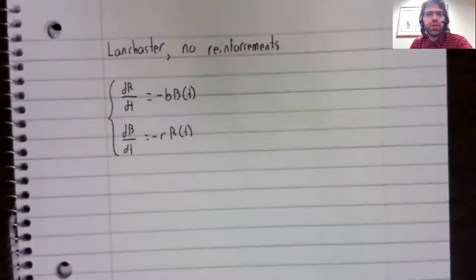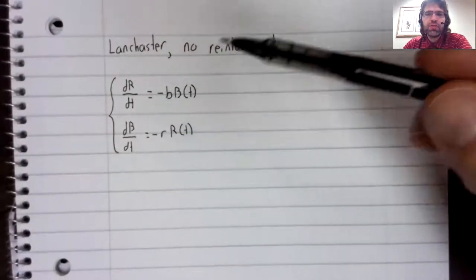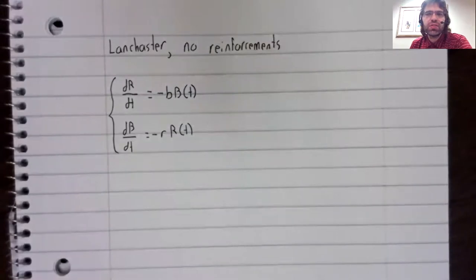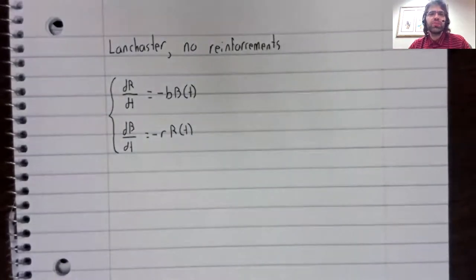We'll start to analyze the Lancaster model with no reinforcements. If you remember from the previous video, that's this system of differential equations where R and B are the sizes of two armies engaged in combat with each other, and lowercase r and lowercase b represent the effectiveness of the soldiers in Red Army and Blue Army, respectively.